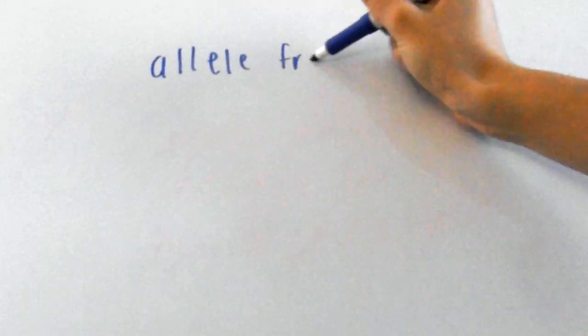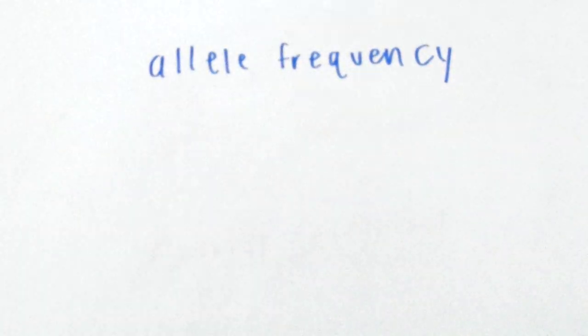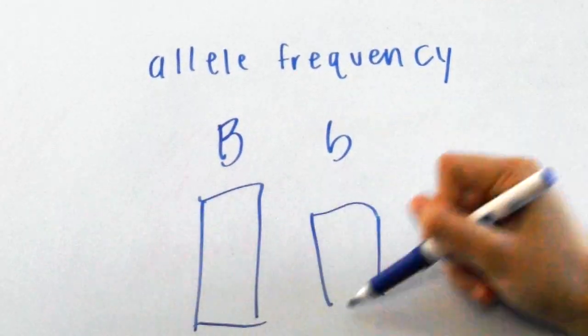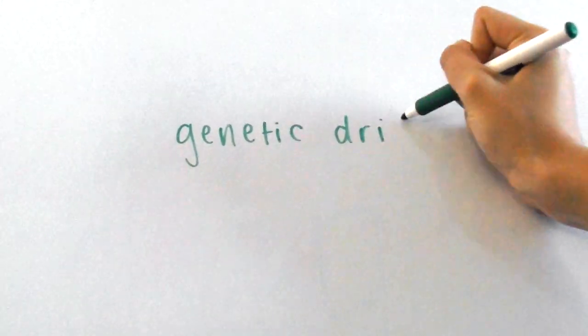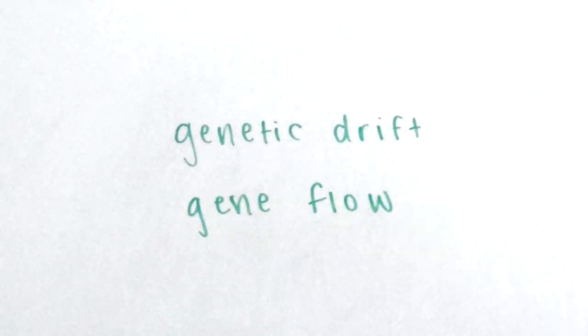Alright guys, so today we're going to go over events that influence allele frequencies in the population. That is to say, genetic drift and gene flow. At the end of this video we'll go over the types of natural selection.